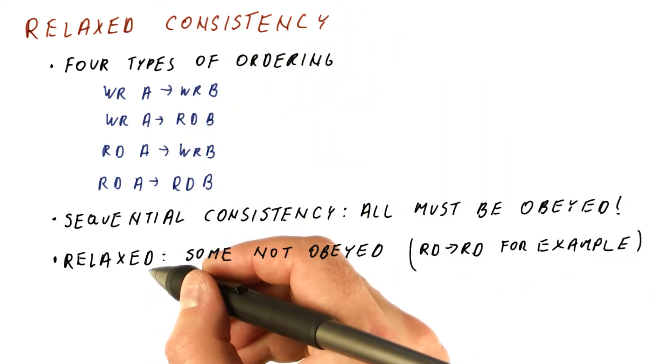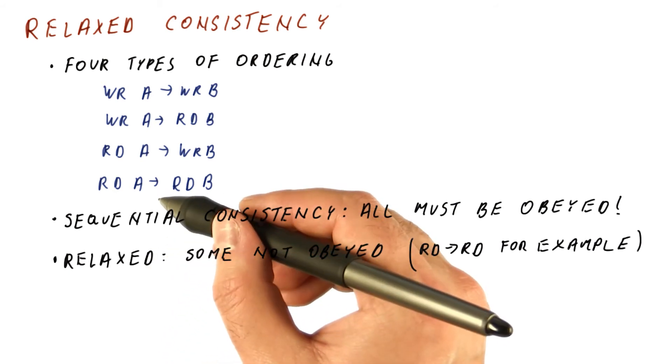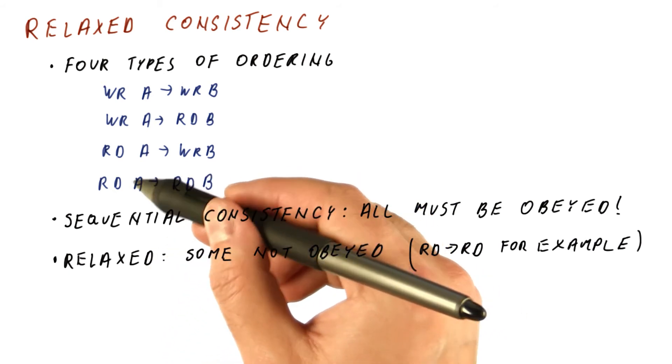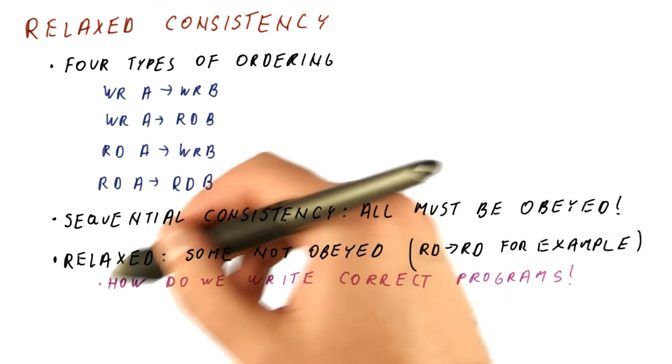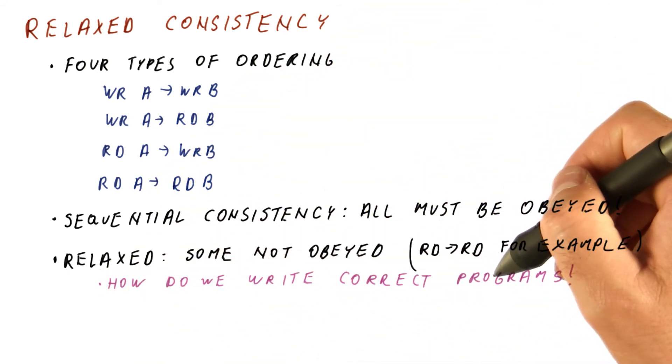If we told programmers that they have to write programs without assuming that reads are done in correct order, then the real question is: how do we write correct programs to begin with?